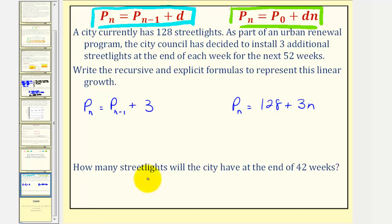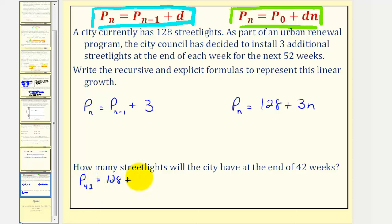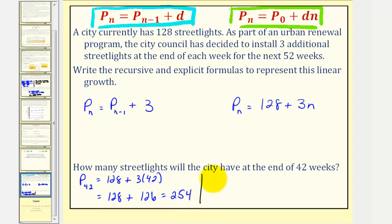To answer the question of how many streetlights the city will have at the end of forty-two weeks, it would take a lot of work to answer this using the recursive formula. But using the explicit formula, we can simply substitute forty-two for n. So P sub forty-two, the number of streetlights after forty-two weeks, is equal to 128 plus three times forty-two, which is 128 plus 126, which is 254. So at the end of forty-two weeks, there are 254 streetlights.